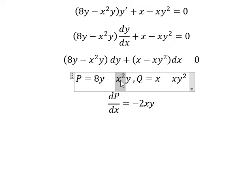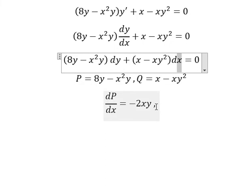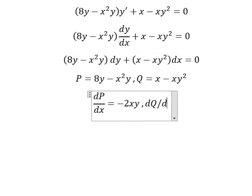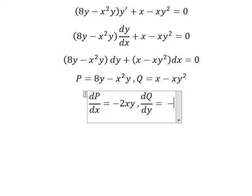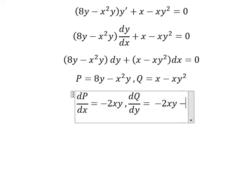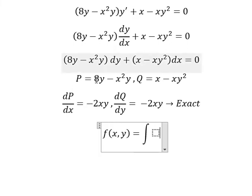The first derivative of x² gives us 2x, so we have ∂P/∂y equal to negative 2xy. Then we take the first derivative of the function Q with respect to y — we have y² in here, so this gives negative 2xy as well. We see that ∂P/∂y equals ∂Q/∂x, so the equation is exact.